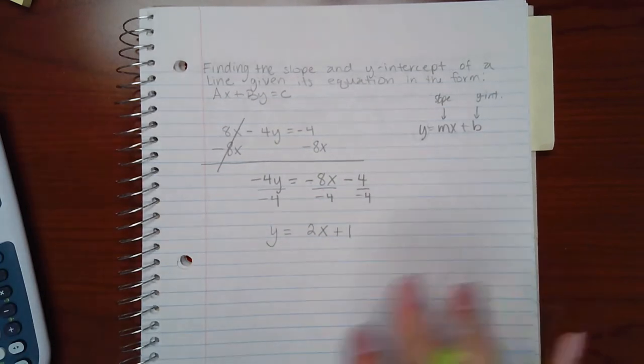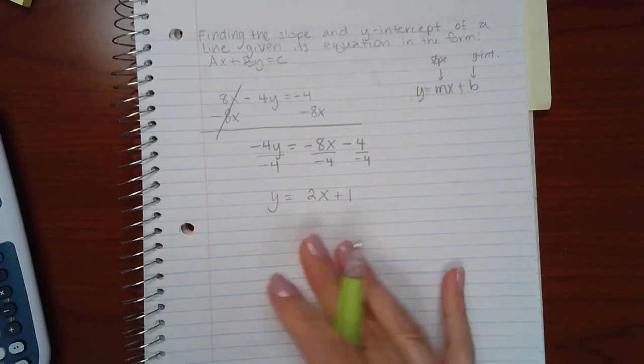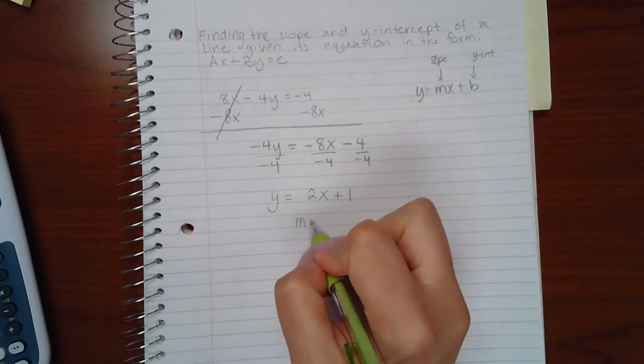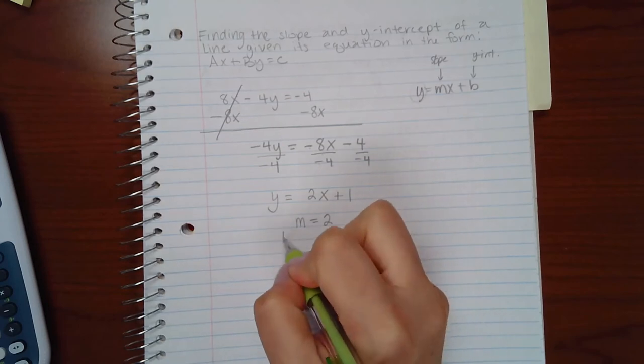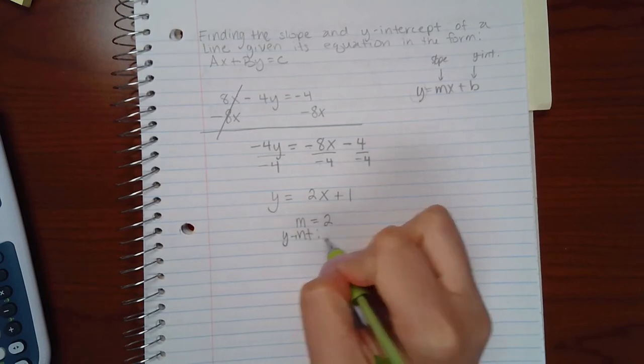And so now we have the equation in its slope-intercept form. So the slope is going to be 2, and the y-intercept is going to be 1.